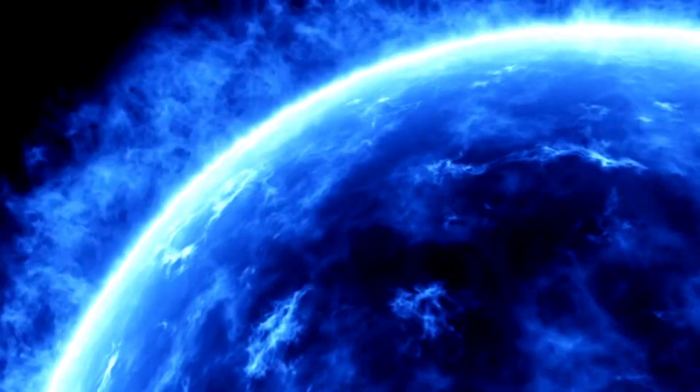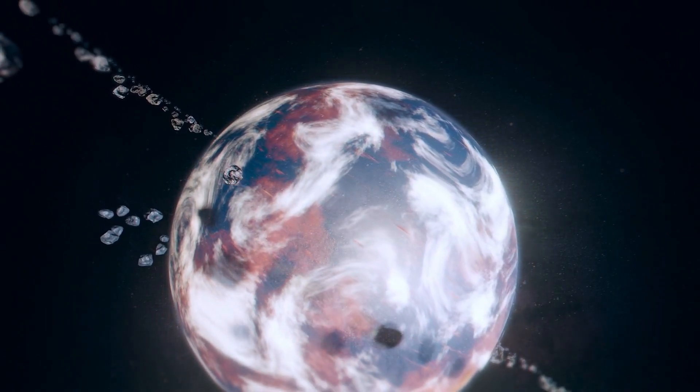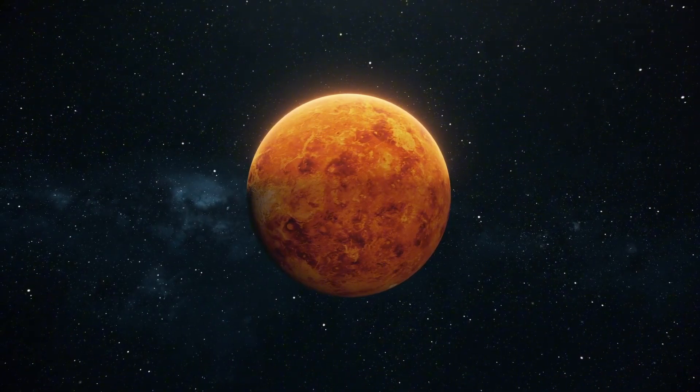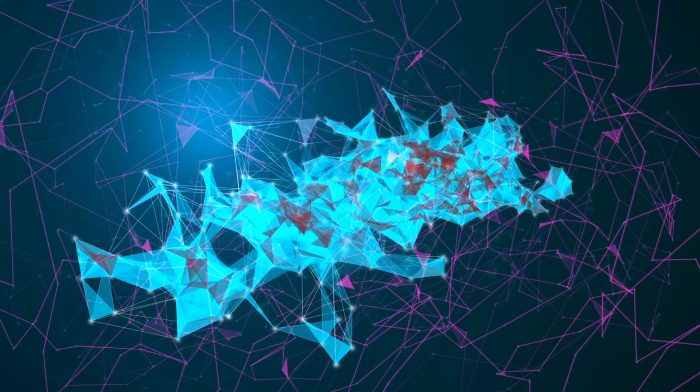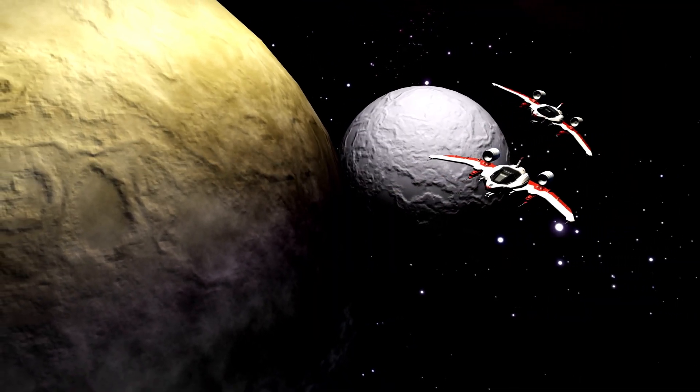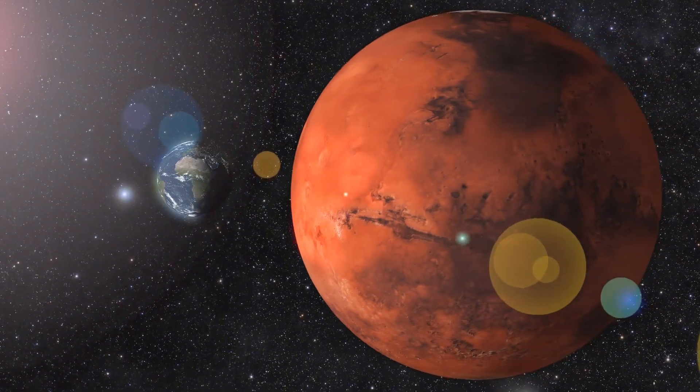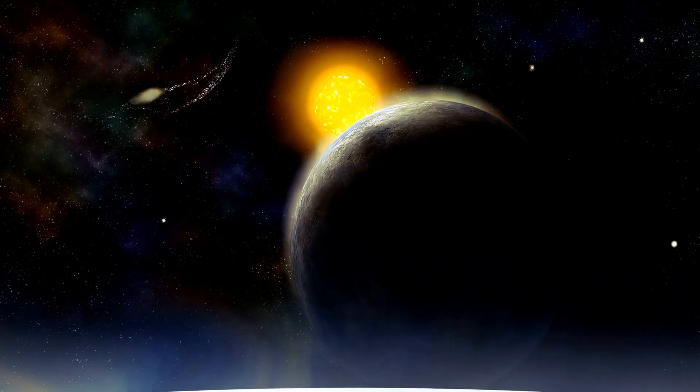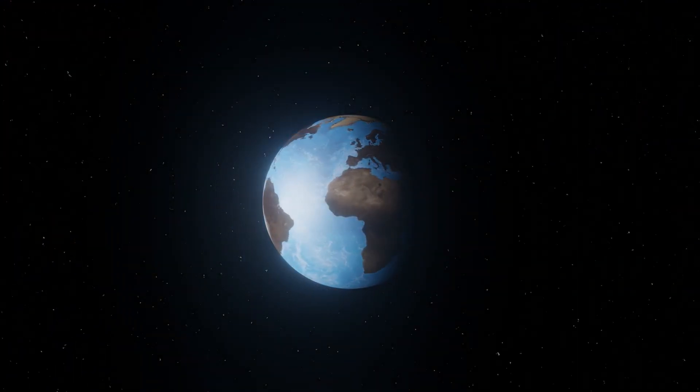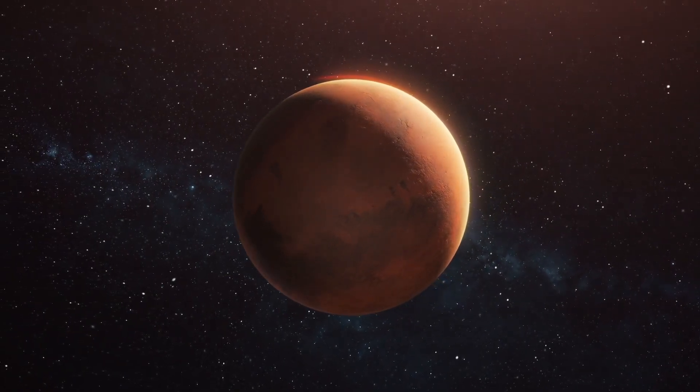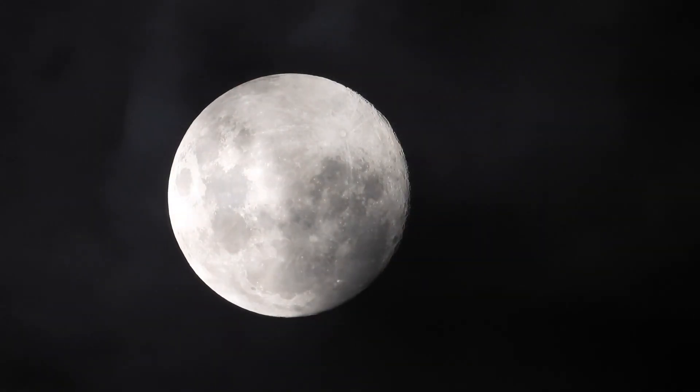The search for exoplanets has further revolutionized our understanding of where life might exist. Kepler's mission alone has discovered thousands of exoplanets, many of which reside in their stars' habitable zones. These discoveries have expanded the definition of what constitutes a potentially habitable world, allowing scientists to consider various factors such as the presence of moons, atmospheric composition, and geological activity. One intriguing aspect is the concept of biosignatures, indicators that suggest the presence of life. Researchers are developing techniques to analyze the atmospheres of distant worlds, looking for gases like oxygen, methane, and carbon dioxide that could indicate biological processes. The potential for using telescopes like the upcoming Extremely Large Telescope or the Roman Space Telescope to search for biosignatures is generating excitement in the astronomical community.